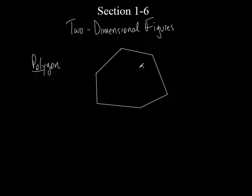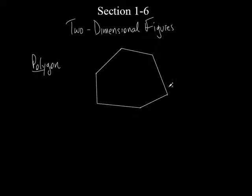It's got to be closed. You can't have gaps in it — there are no openings. Because every endpoint is connected to another endpoint. Every one of these segments, the endpoints are connected to another endpoint of another segment. So that's basically a polygon.